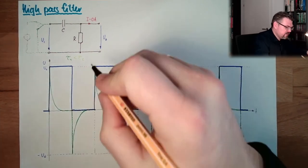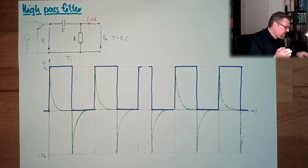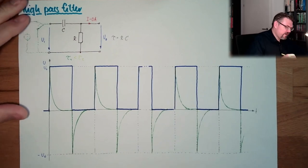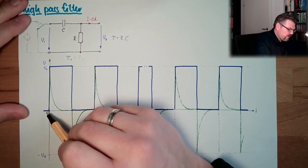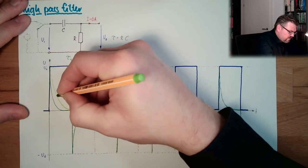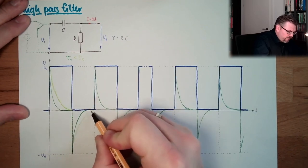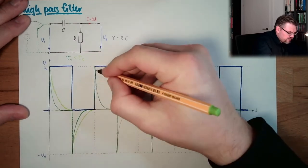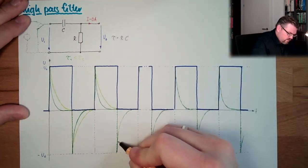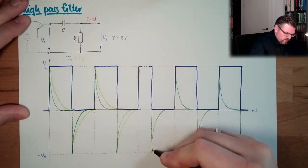Now let's think about what happens if we have a longer tau, a longer time constant. Tau equals R times C. It doesn't really matter if tau is changing or if the frequency is changing — it's just the ratio between frequency and tau. So we're going up, and then we might just reach the end value. This is how this would look like.